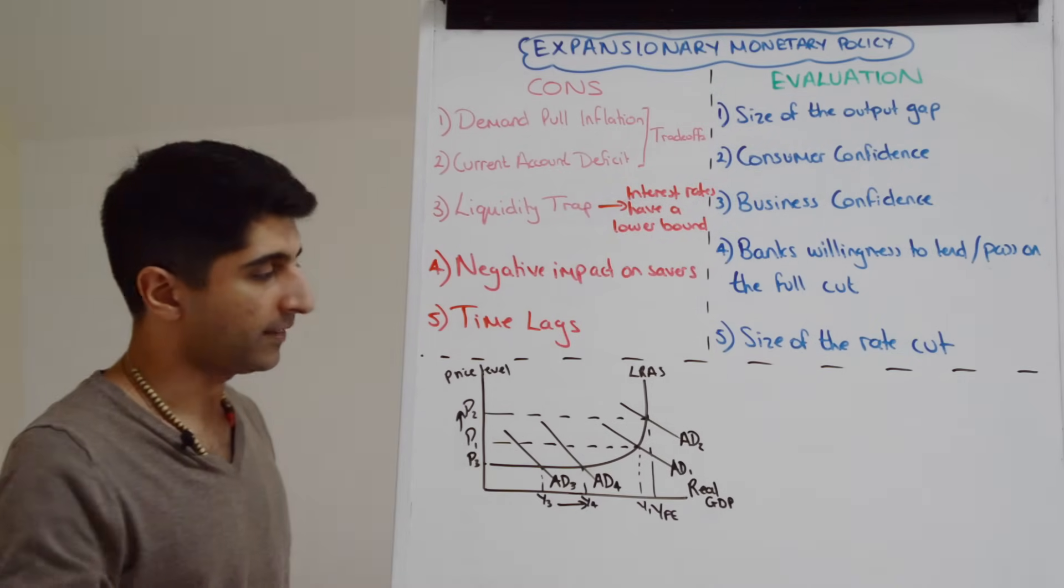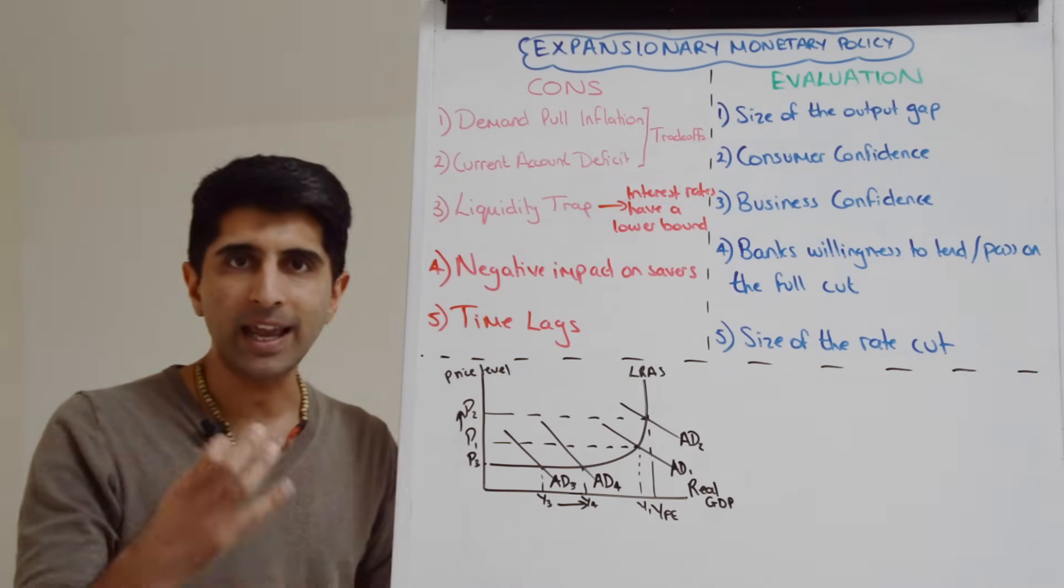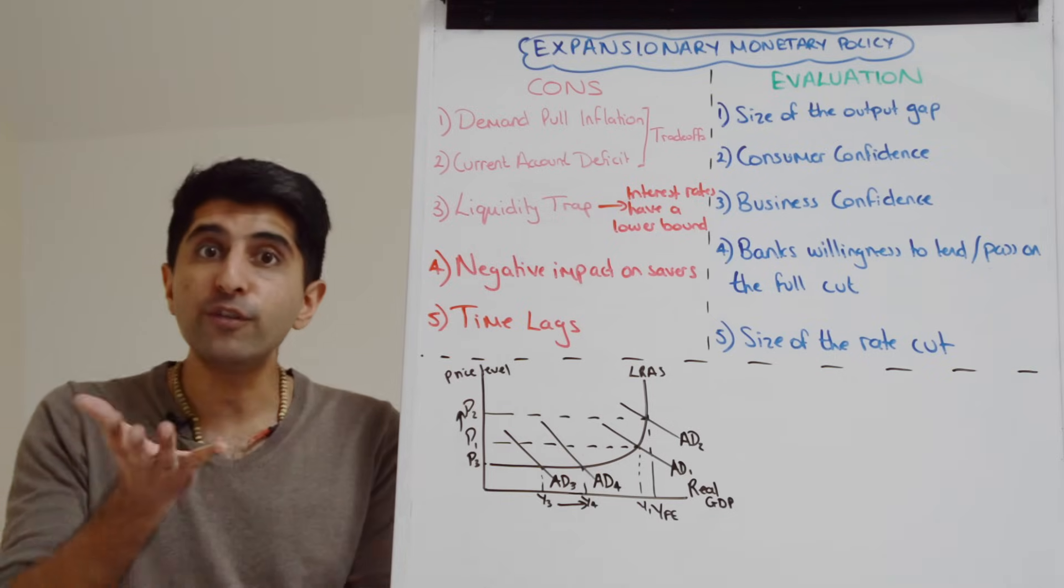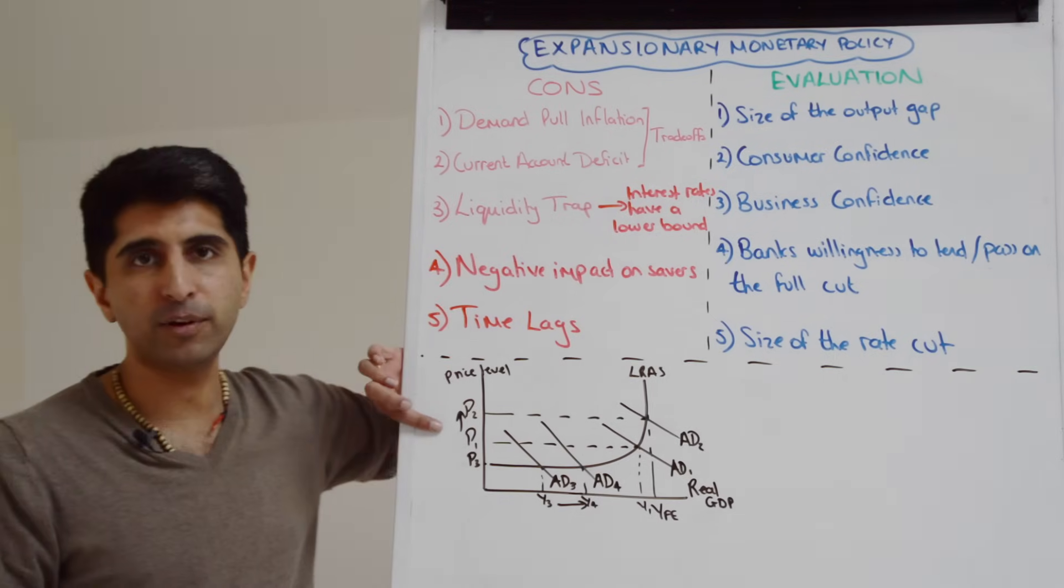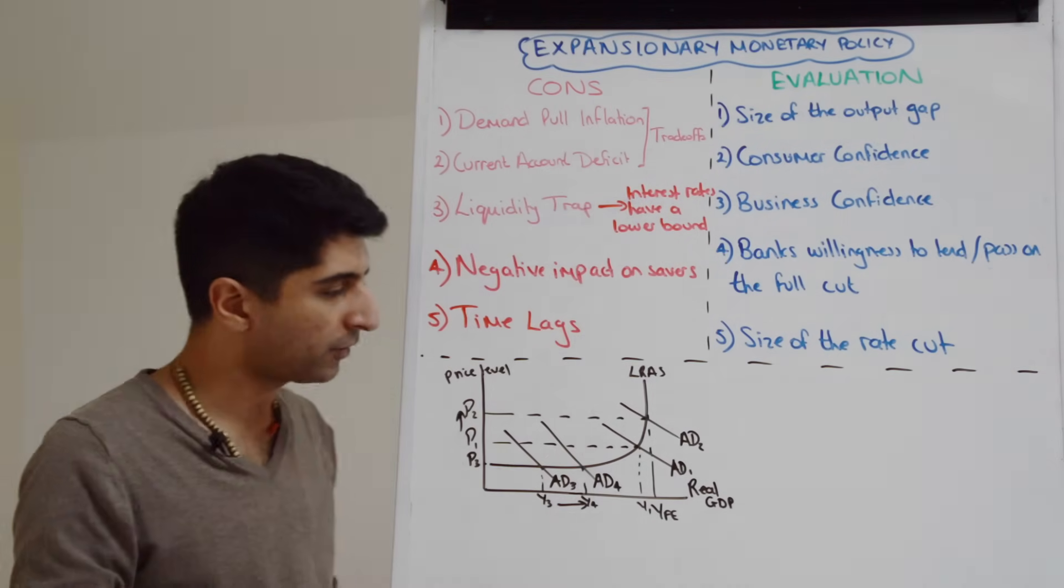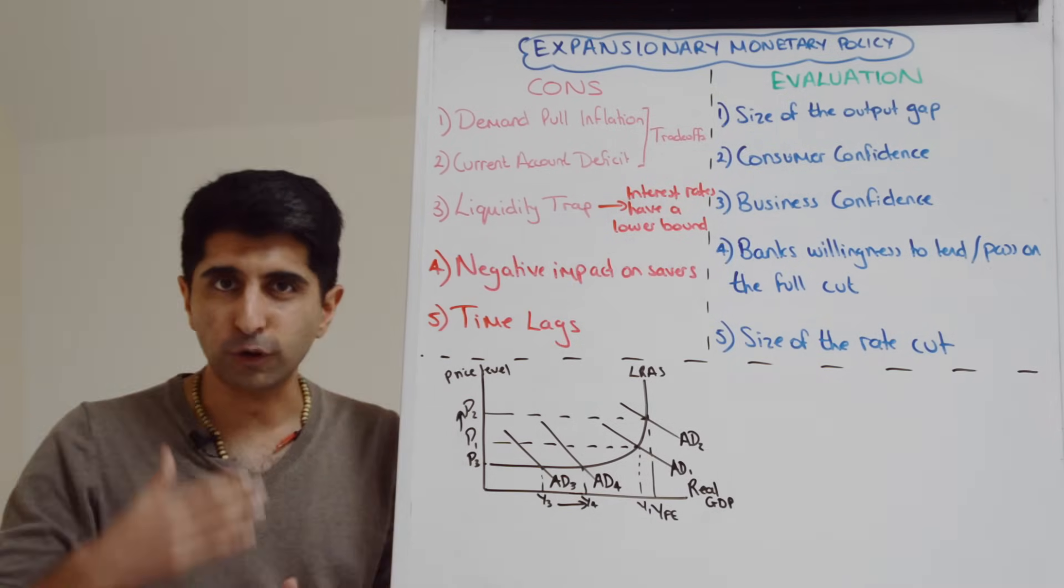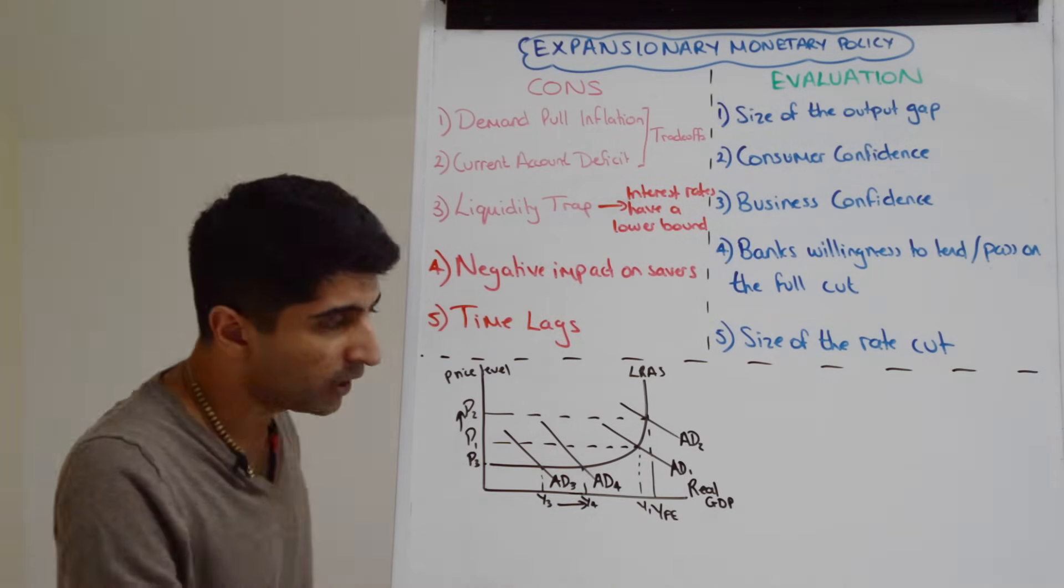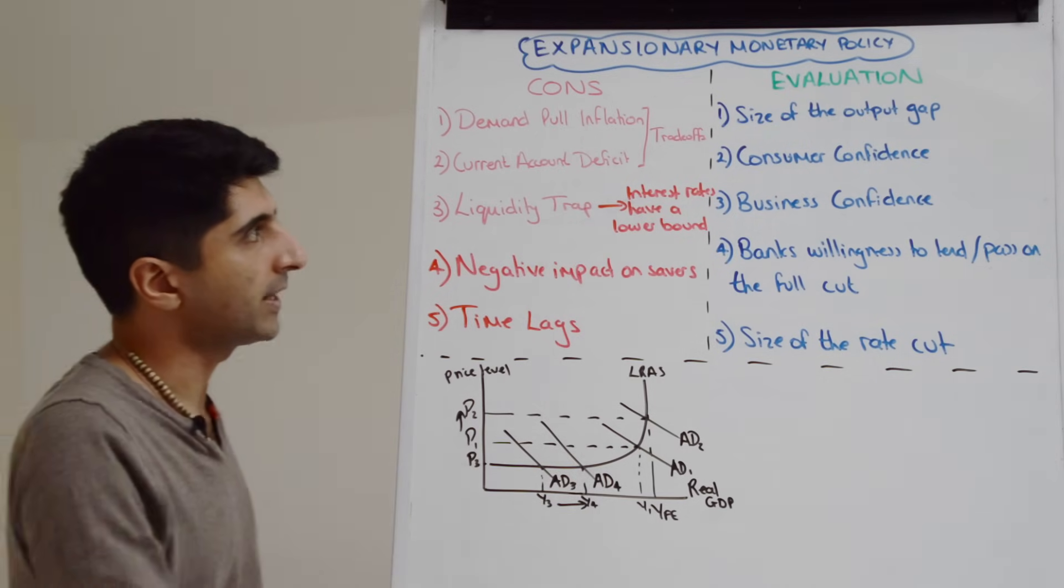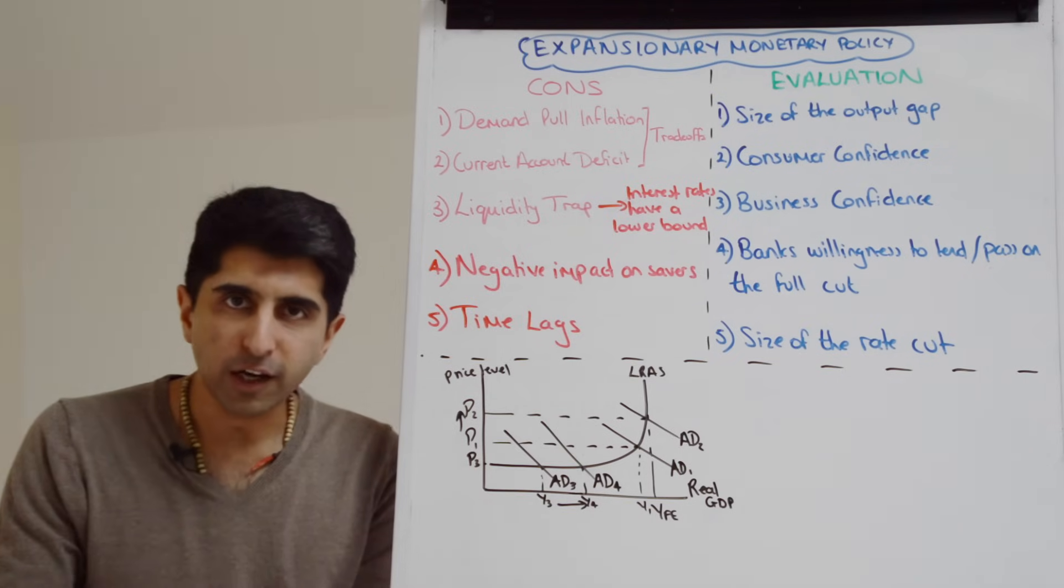then any cut in interest rates, it might boost aggregate demand, but we're not going to see much growth, we're not going to see much reduction in unemployment rates. In fact, what we're going to see more is inflation overshooting the target, higher demand-pull inflation as a trade-off. Whereas if the economy is in a deep recession with a large negative output gap, then a cut in interest rates has got greater potential to boost growth, to reduce unemployment without much demand-pull inflationary pressure as a side effect.